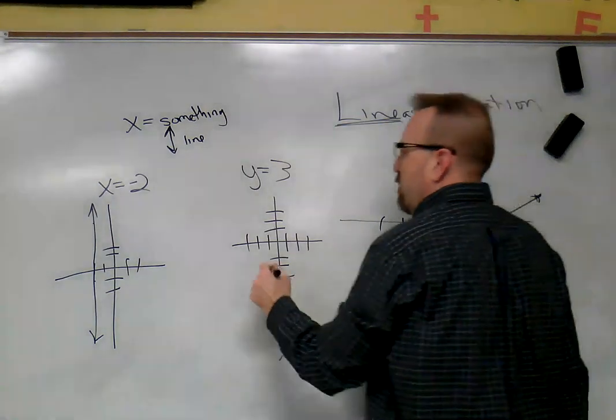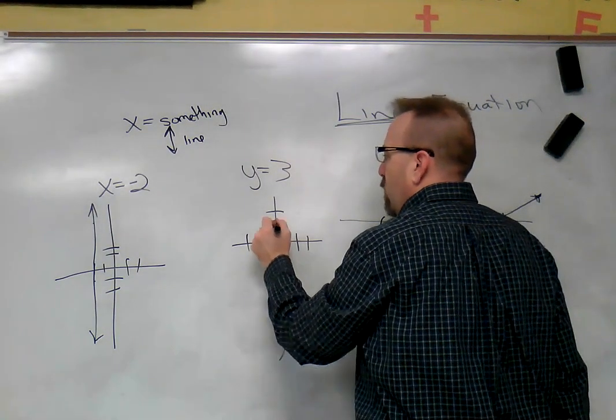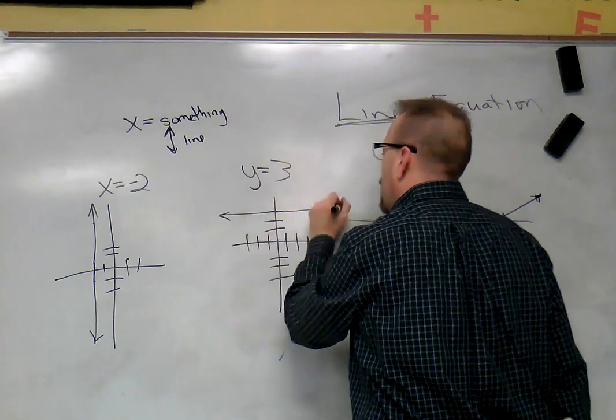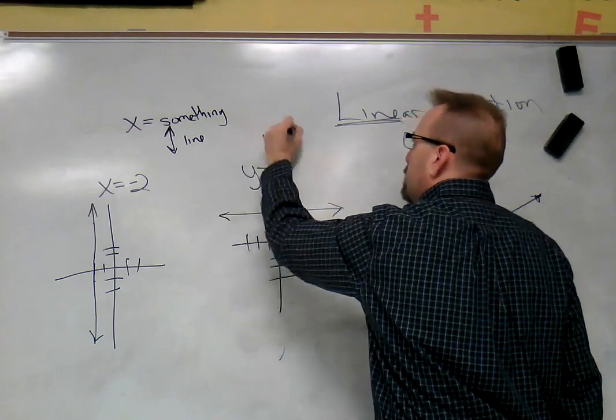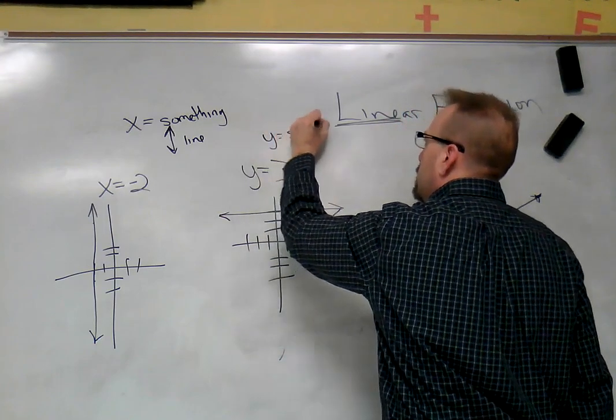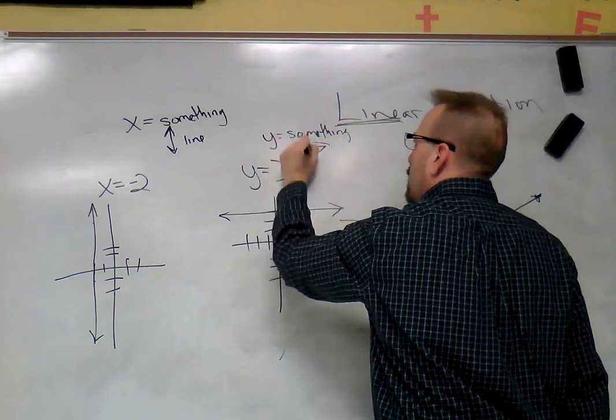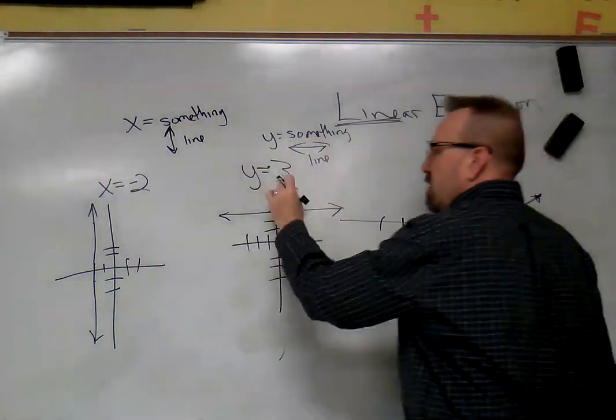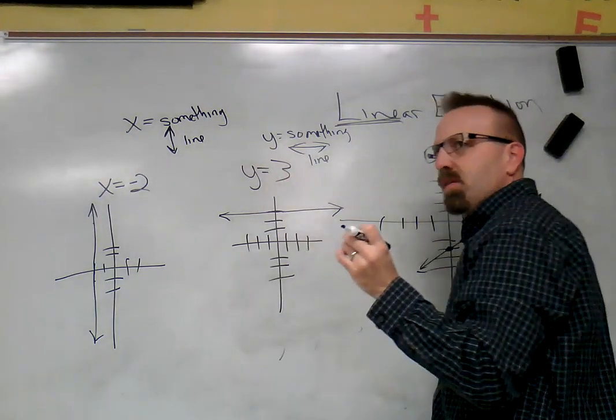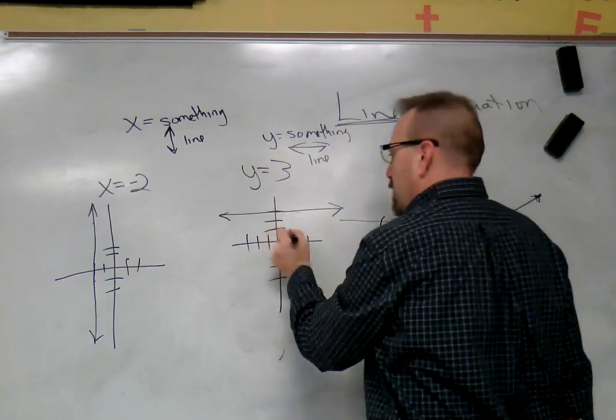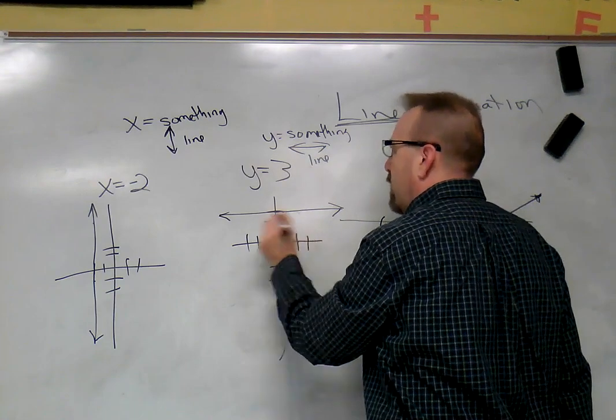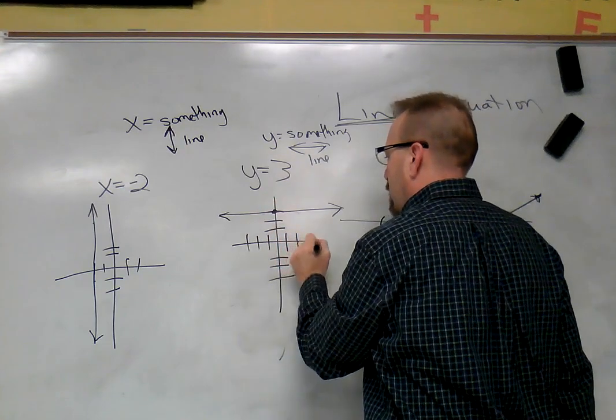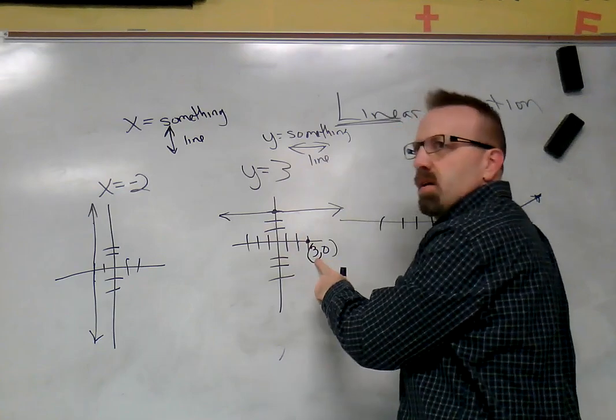Same thing here. If we go to y is three, y is one, y is two, y is three, we're going to go across. So if it's y equals something, it's going to be a horizontal line. It's opposite of the axis. That's the part I always forget. So I think about graph points. If you can't remember, graph a few points here. Graph (3, 3). And then think about, okay, that's three zero, x is three there, not y.